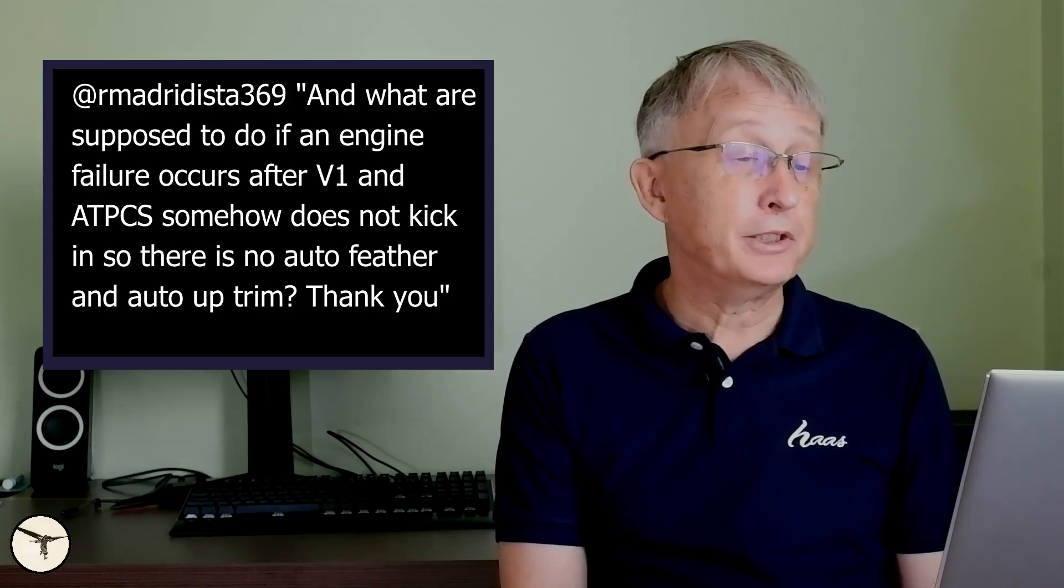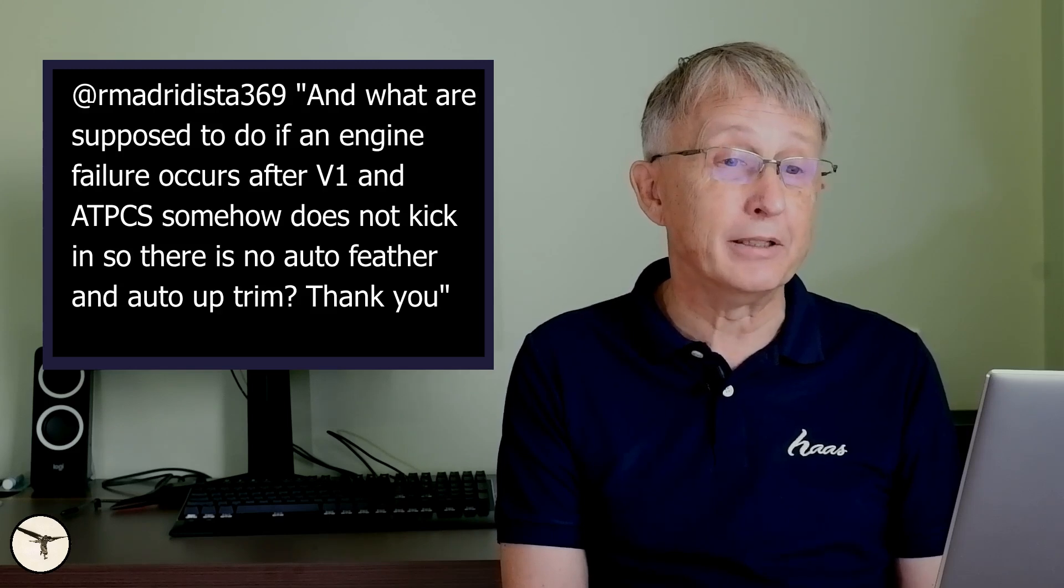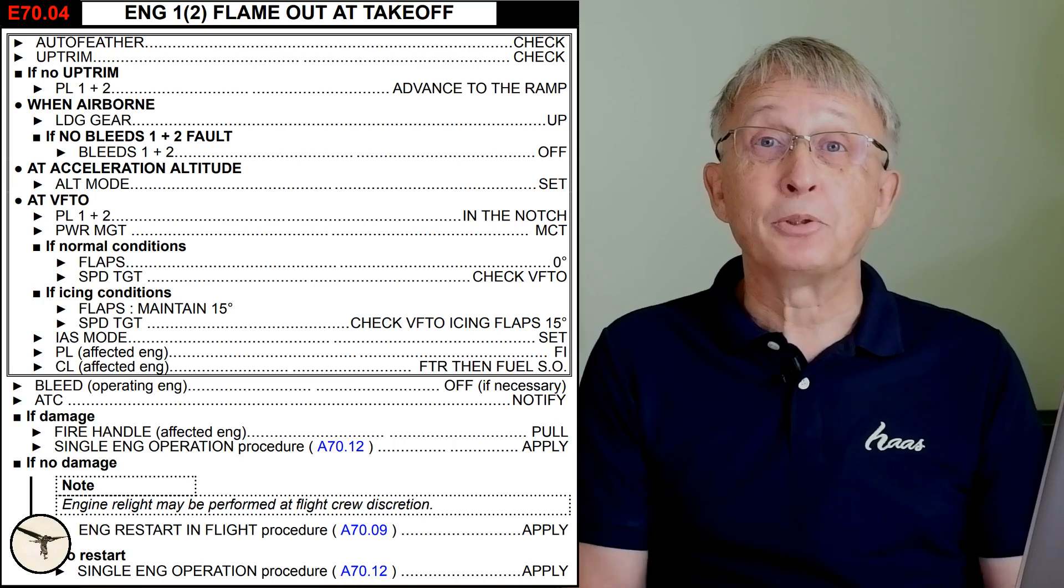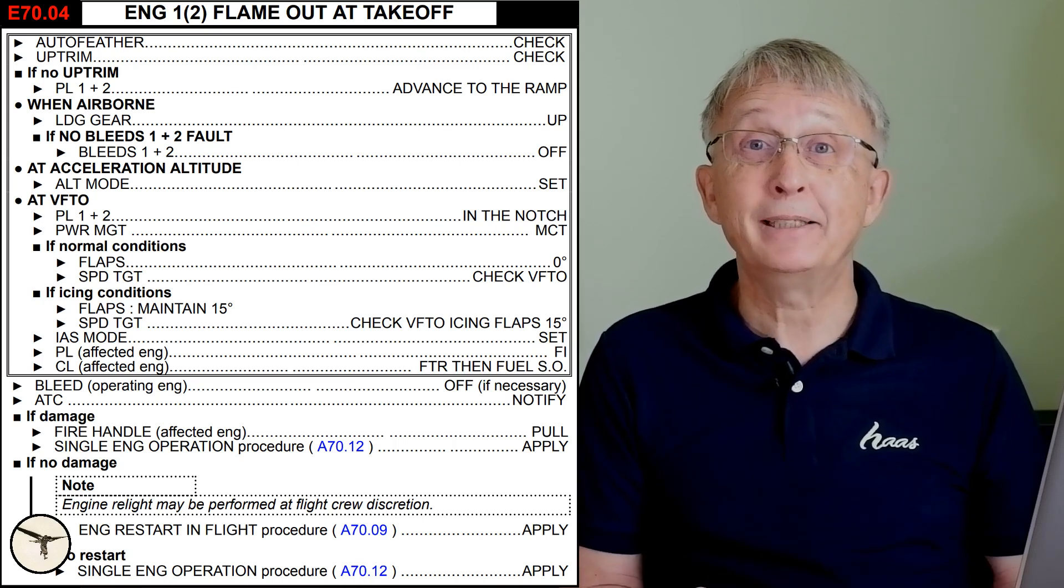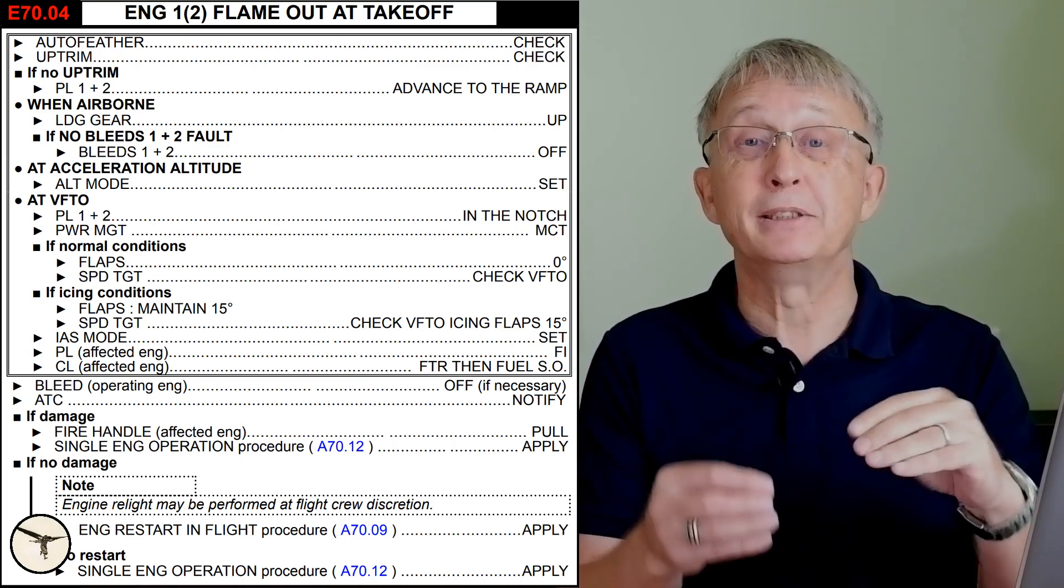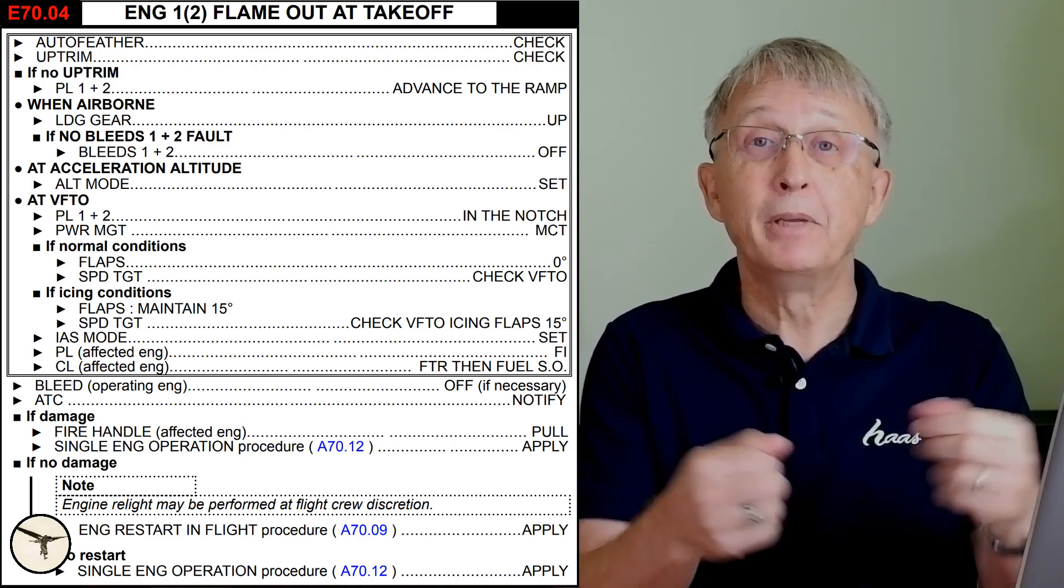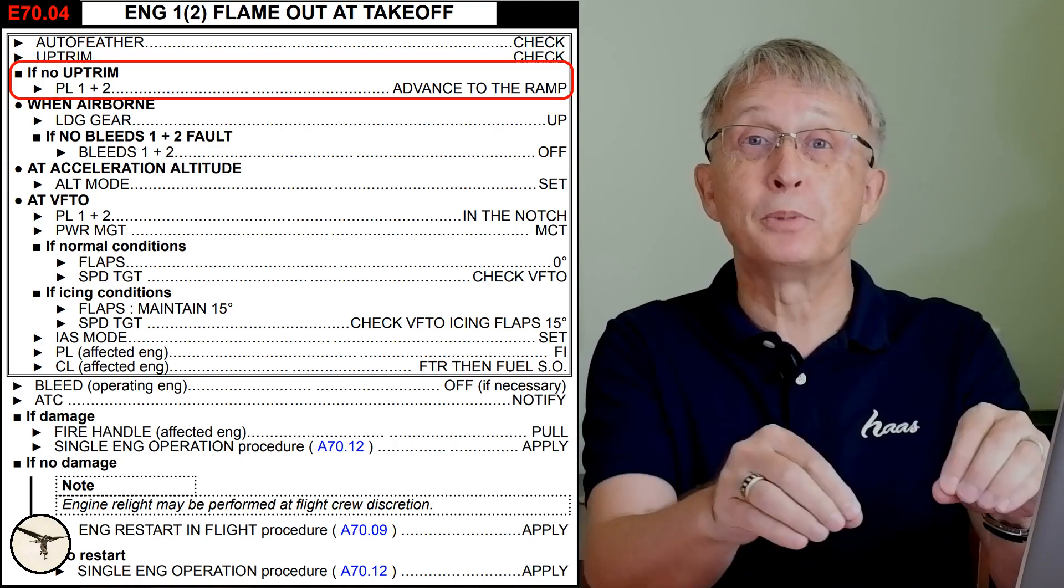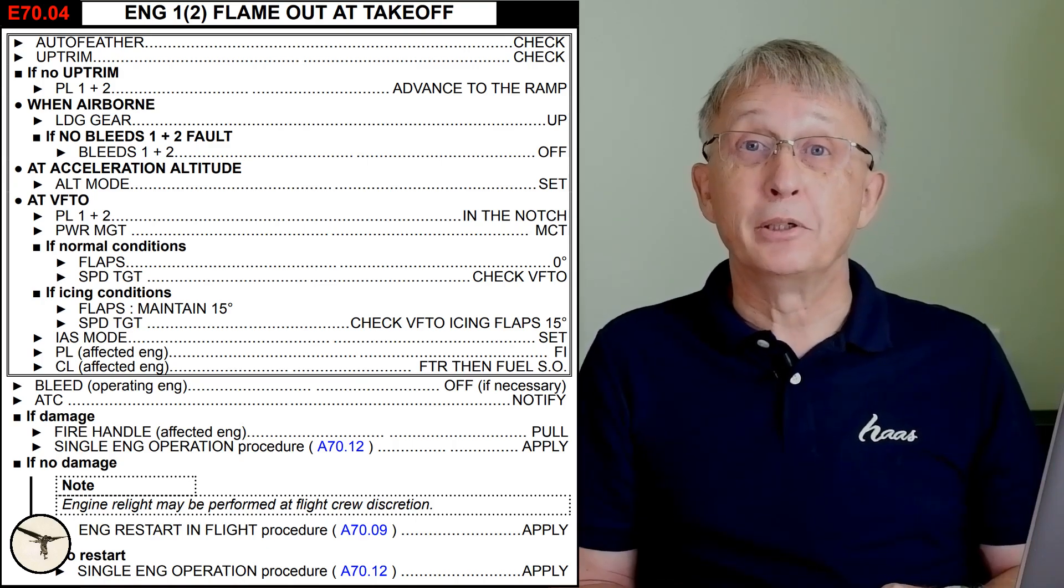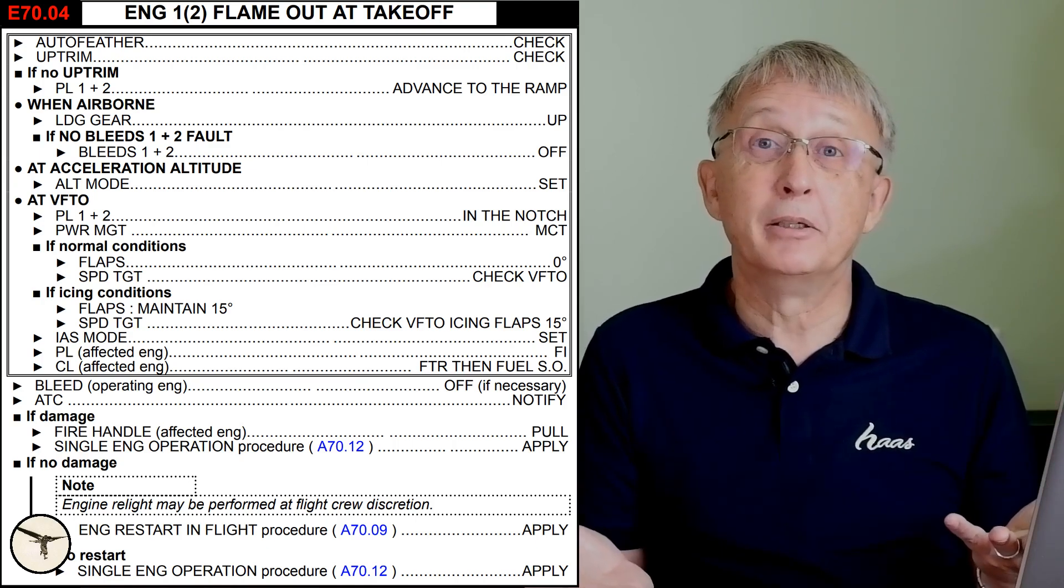What are you supposed to do if an engine fail occurs after V1 and ATPCS somehow does not kick in? There is auto feather and auto uptrim. The procedure for engine flameout is the pilot monitoring checks you have uptrim. That means power on the good engine increases 10% more. If not, you move both power levers to the ramp to get that power. You check the auto feather, but it's not mentioned anything in the manual.